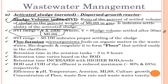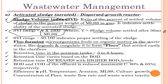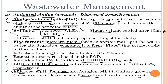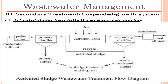Flock-forming microorganisms feed on organic matter in the wastewater, coagulate, and form flocs that settle easily in the clarifiers. Floc formation is important so that matter coagulates, becomes heavier, and settles in the clarifier tank. The retention time in the aeration tank is about 3 to 8 hours and increases with higher BOD levels. BOD and COD of the effluent are reduced by a maximum of about 80 percent and 65 percent respectively. The efficiency of the aeration tank is directly proportional to pH, temperature, aeration, MLSS, culture growth, concentration of flocs, and wastewater toxicity.